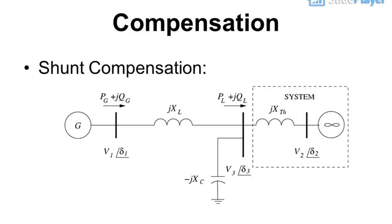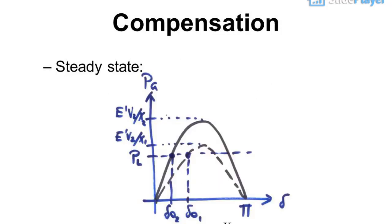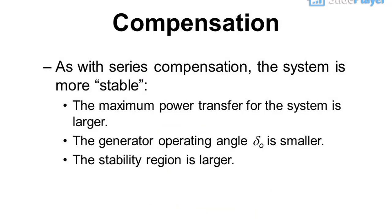Shunt Compensation in Steady State: as with series compensation, the system is more stable. The maximum power transfer for the system is larger, the generator operating angle δ is smaller, and the stability region is larger.